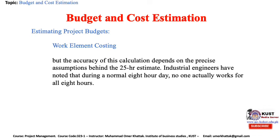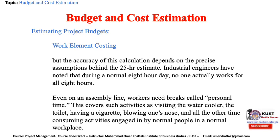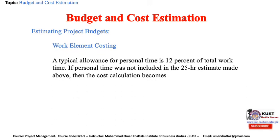However, the accuracy of this calculation depends on the precise assumptions behind the 25-hour estimate. Industrial engineers have noted that during a normal 8-hour day, no one actually works for all 8 hours — workers need personal time for breaks, visiting the water cooler, and other time-consuming activities. A typical allowance for personal time is 12% of total work time. If personal time was not included in the 25-hour estimate, the corrected cost calculation becomes: 1.12 × 25 hours × $17.50 × 1.84 = $901. Not including personal time ensures an underestimate.